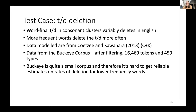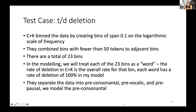As a test case, I'll look at TD deletion in English, where more frequent words tend to delete the T or D more often. I'm taking data from the C&K paper and the Buckeye corpus. The Buckeye corpus is quite small, making it difficult to get reliable estimates especially for lower frequency words. They create bins spanning 0.1 on the log scale, combining bins to ensure enough tokens — a total of 23 bins. In their modeling, the rate of deletion is the overall rate for each bin. In my input, all bins are input with 100% deletion, but we compare to this overall rate.